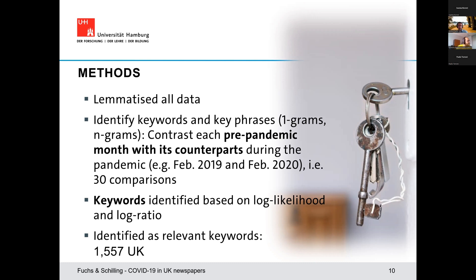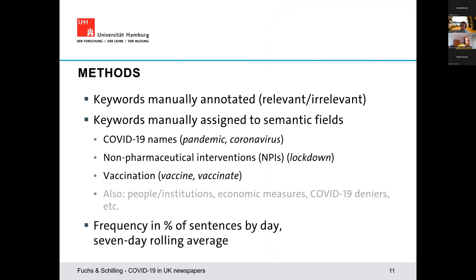We had more than one and a half thousand potential keywords, of which some are very frequent and many are of medium or low frequency. We manually annotated these for relevance — whether related to COVID-19 or not — retaining only those that are indeed relevant and assigning them to semantic fields. The most frequent semantic fields are COVID-19 names such as pandemic and coronavirus, non-pharmaceutical interventions such as lockdown and mask wearing, and vaccination with words such as vaccine or vaccinate.